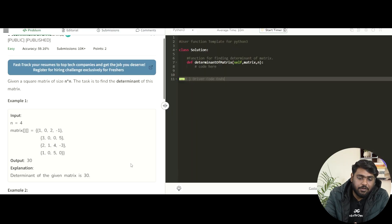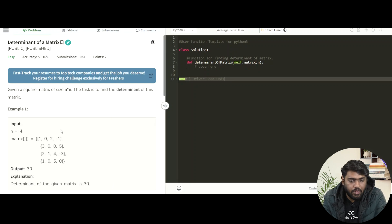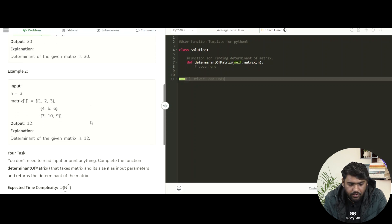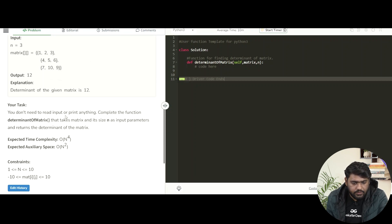Hello everyone, let's solve today's problem of the day. We have determinant of a matrix today. As the problem statement says, given a square matrix of size n cross n, the task is to find the determinant of the matrix.